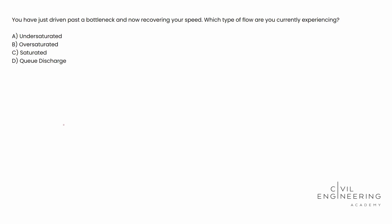Here's what the question says: you have just driven past a bottleneck and now recovering your speed. Which type of flow are you currently experiencing? This is a great transportation theory problem about uninterrupted flow. They can ask you about being unaffected by upstream or downstream bottlenecks, being backed up within a queue, or all types of different scenarios. I encourage you to study all of the material and look at the highway capacity manual, page 12-5, which gives some really good characteristics of unsaturated flow, Q discharge flow, and oversaturated flow.